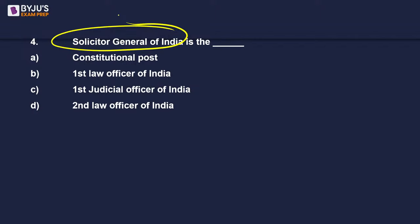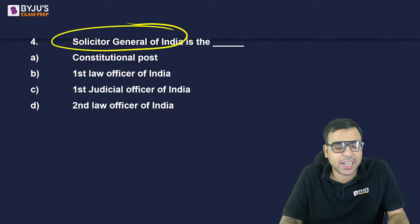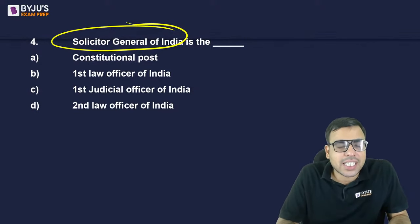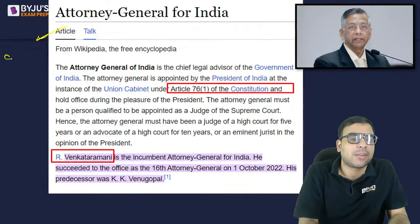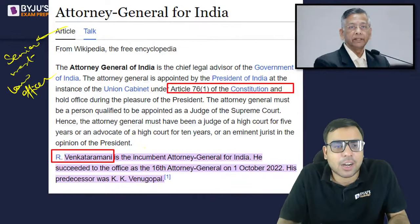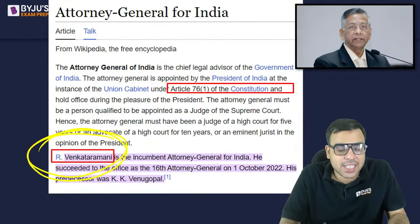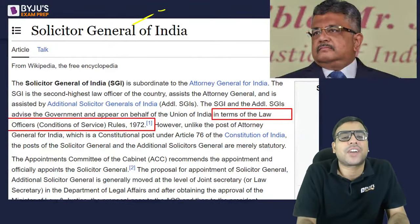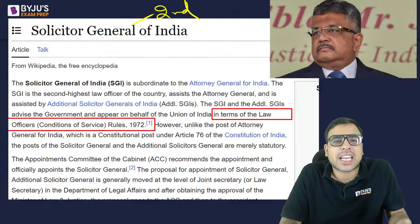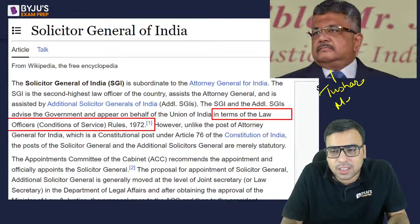The Solicitor General of India and Attorney General of India come in the news frequently. The Solicitor General is the second senior-most law officer of India — so D is the right answer. The senior-most law officer of the central government is the Attorney General, covered under Article 76 of the Constitution. The current Attorney General of India is R. Venkataramani. The second law officer — Solicitor General — is Mr. Tushar Mehta.